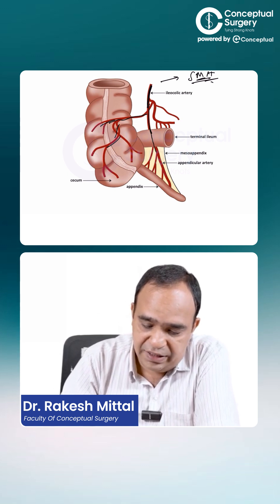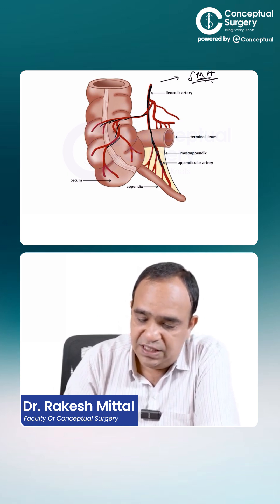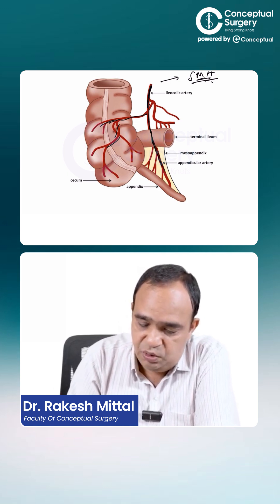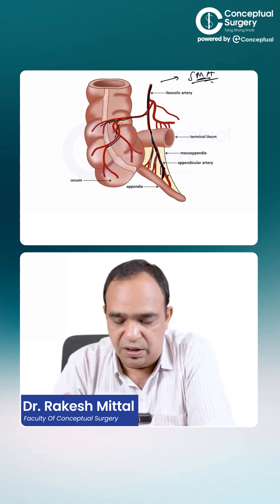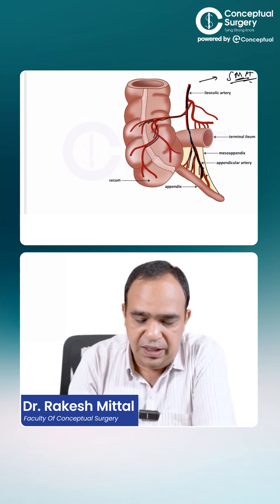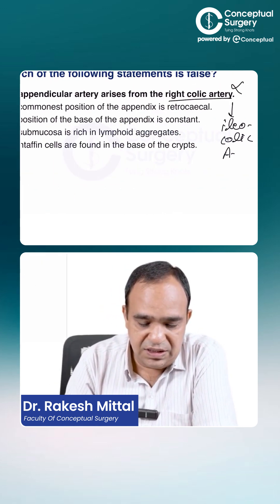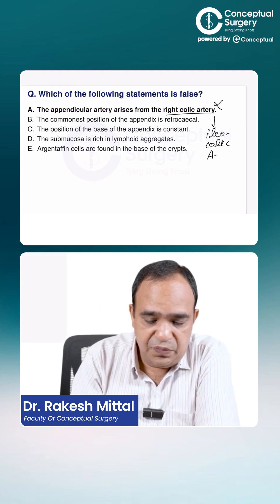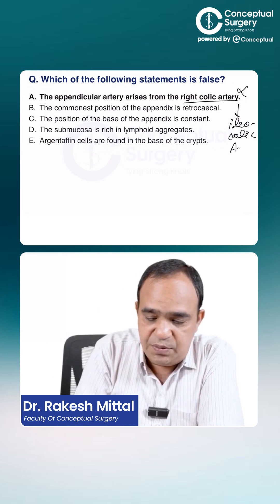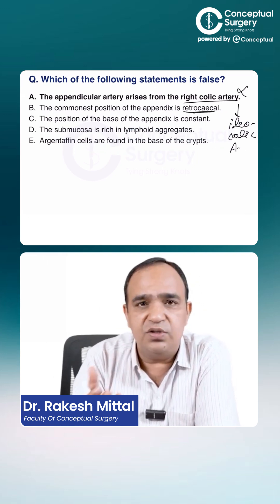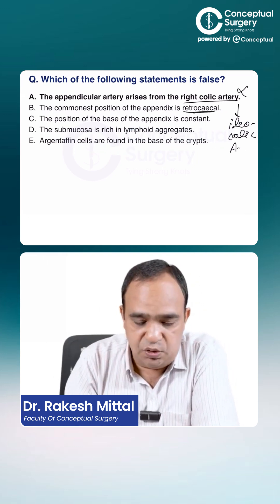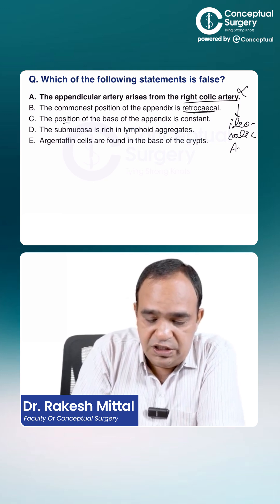The inferior division of the ileocolic artery gives rise to the appendicular artery and its branches. So this is straightforward. The commonest position of the appendix is retrocecal, as I've just shown you.